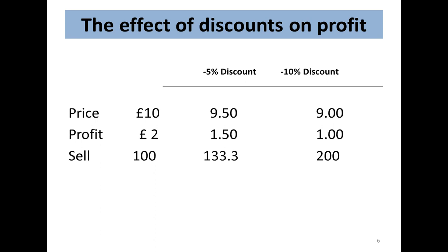This next slide illustrates the dramatic effect that discounting has on the bottom line. If one of your salespeople says, 'Boss, for a 5% discount we can keep the business' — note: keep it, not get it — just look at the impact. For a product costing £10 with a margin of £2, selling 100 units, you now have to sell 33⅓% more just to make exactly the same profit as before.